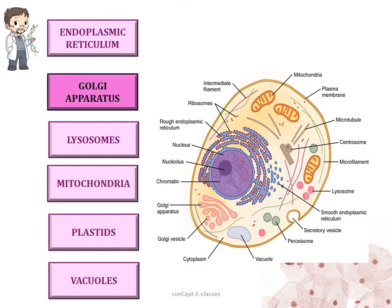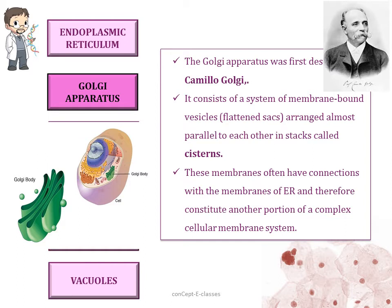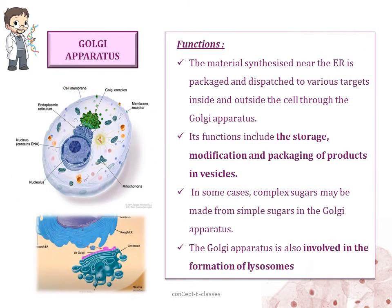The next organelle is the Golgi apparatus, first described by Camillo Golgi. The Golgi apparatus consists of a system of membrane-bound vesicles of flattened sacs arranged almost parallel to each other in stacks called cisterns. These membranes often have connections with the membranes of the endoplasmic reticulum, and therefore the Golgi apparatus also constitutes another portion of the complex cellular membrane system. The materials synthesized near the endoplasmic reticulum are packaged and dispatched to various targets inside and outside the cell through the Golgi apparatus.